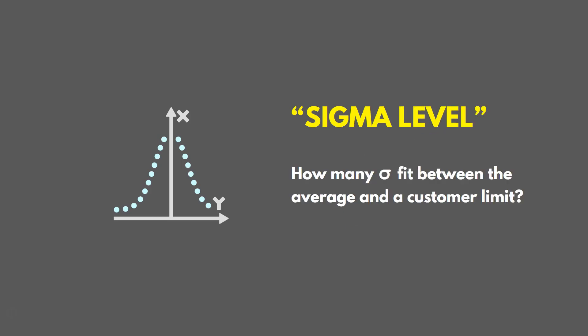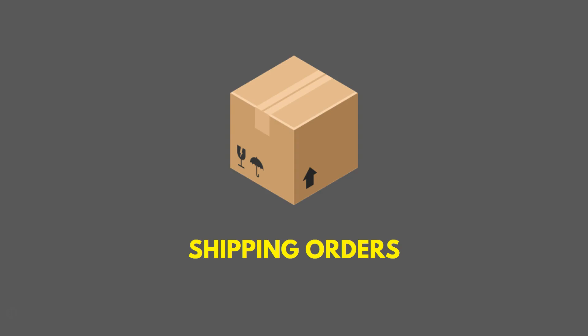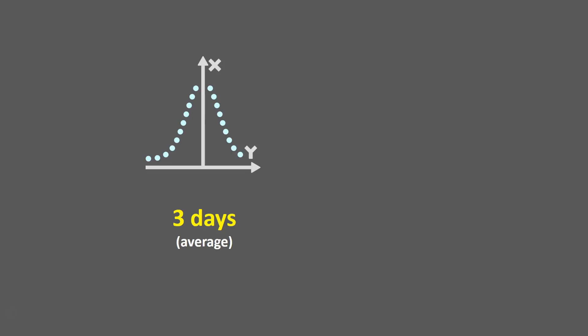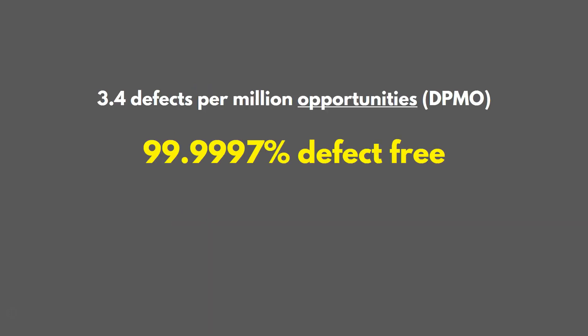A Sigma level tells us how many standard deviations fit between the average and a customer limit. For example, in a shipping process, if on average it takes three days to ship an order and the customer limit is nine days, we ask how many standard deviations fit between that average and the customer limit. Ideally, we'd like to see six — that's reaching a Sigma level of six, or Six Sigma. At Six Sigma, we have 3.4 defects per million opportunities or fewer, which is almost 100% defect-free. It may sound impossible, but there's always room to improve, and we continually get closer to Six Sigma as we make improvements.